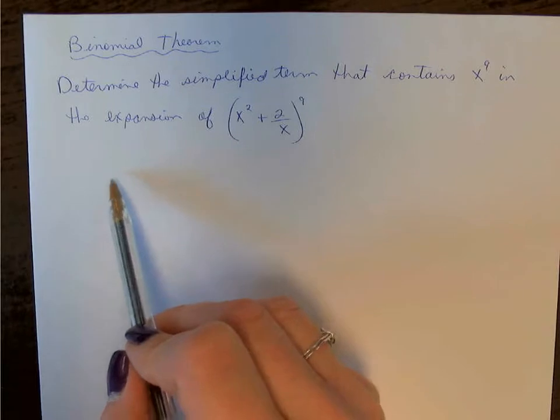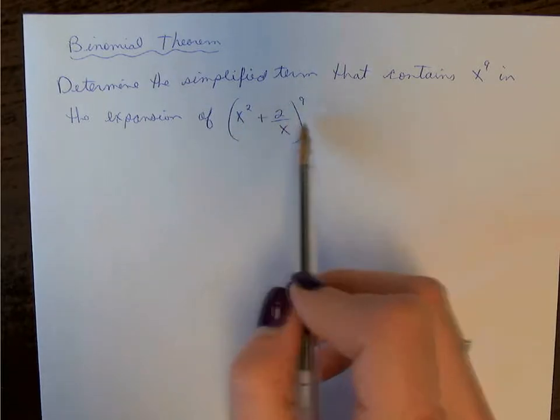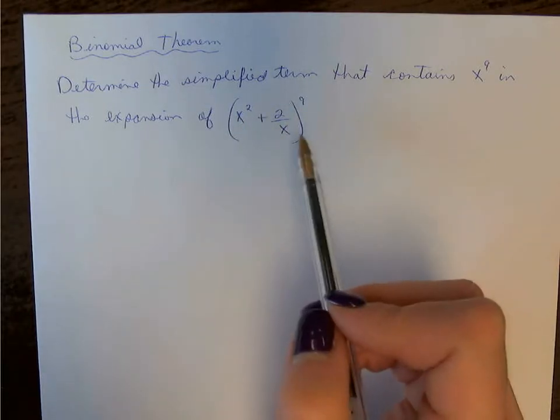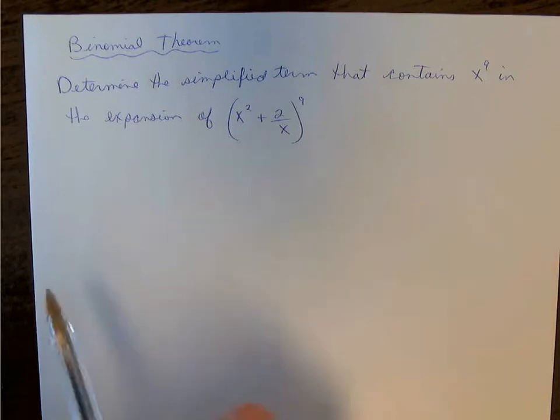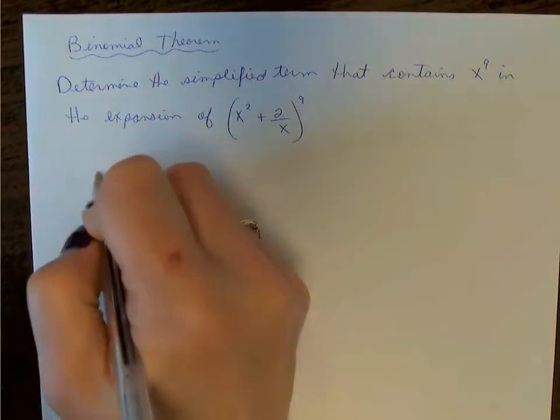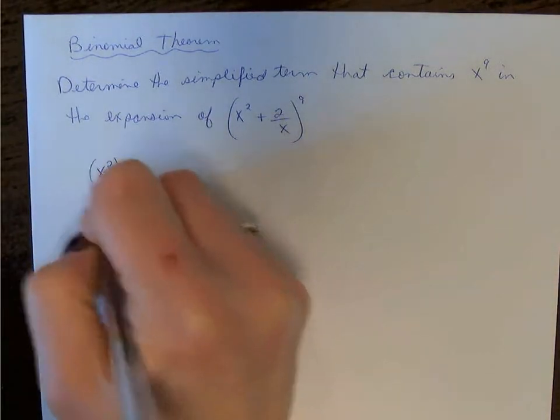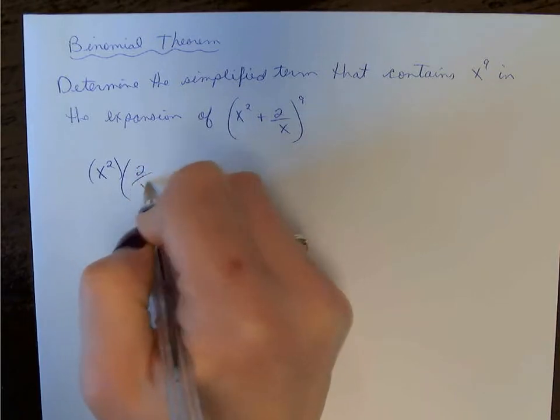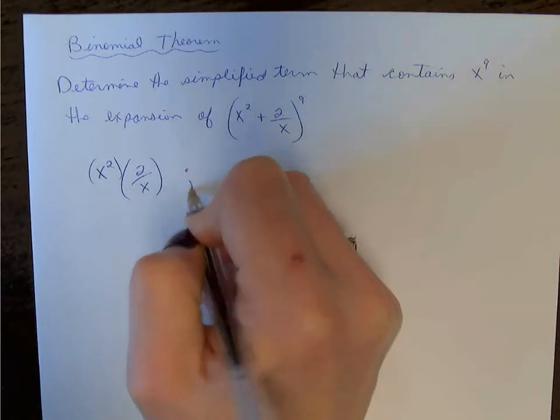Rather than expanding everything, we're going to look for the pattern of exponents, so we're going to ignore the coefficients. I'm not going to write the combinations in for each coefficient. Rather, I'm going to jump to just writing down the first terms and we'll put in the pattern of the exponents.